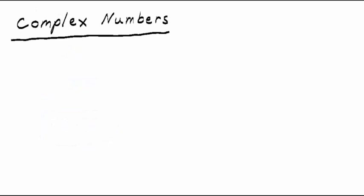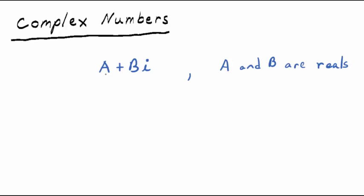We haven't talked about complex numbers yet. A complex number is a mixture of a real number — think of the number line you're used to — and an imaginary number. Any number of the form A plus BI, where A and B are real numbers, is called a complex number.